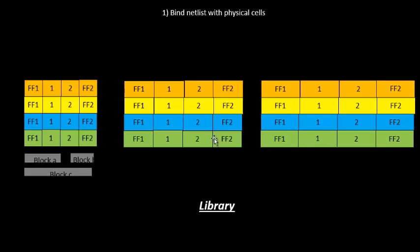We have varieties — various flavors of, let's say, an inverter. We have this size, this size, and this size. Another flavor comes from different threshold voltages. The concept of threshold voltage and the parameters that modulate it were explained earlier. Based on those parameters, there are various physical cells built — for example, an inverter will be built with various values of threshold voltage.